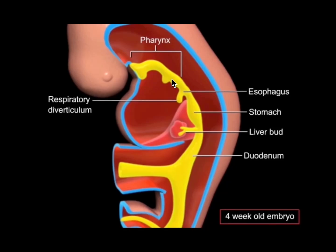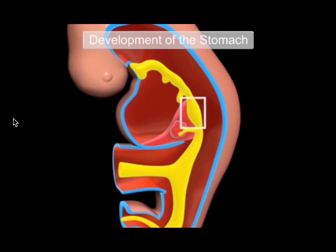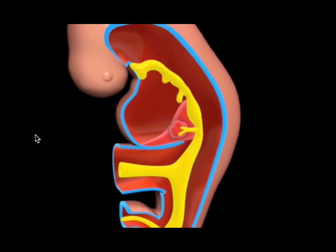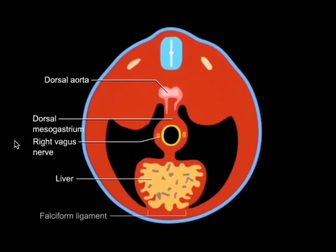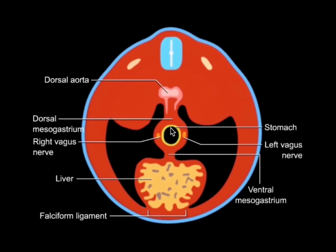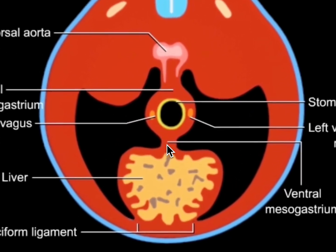To start the development of the stomach, let's take a look at a transverse section from above — a bird's eye view. This transverse section shows that the primordial stomach is at first initially oriented along the median plane, attached to the body wall by mesentery which has different names depending on where it is. The dorsal mesogastrium attaches the stomach to the dorsal body wall, and the ventral mesogastrium to the ventral body wall.